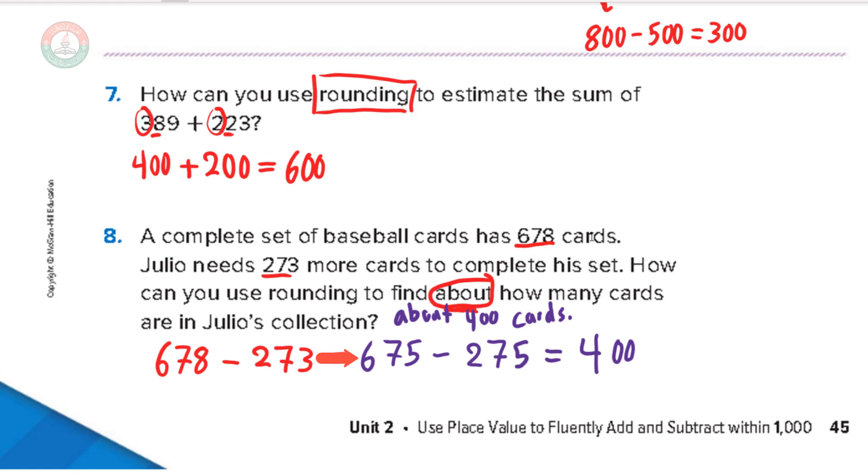If you use rounding, let's see if we use rounding. So 678 minus, so this is or. So this or this. You don't need to do both. Minus 273 equals. Let's round to the hundreds.